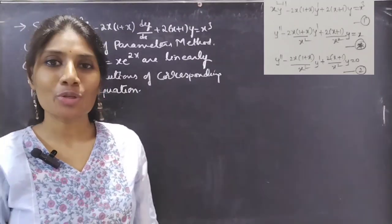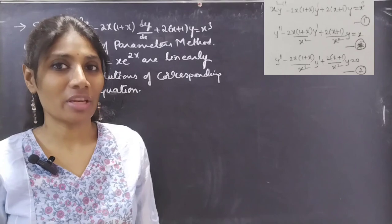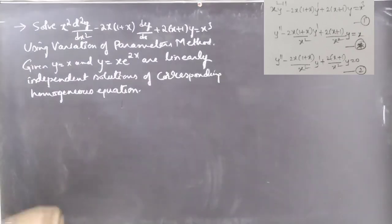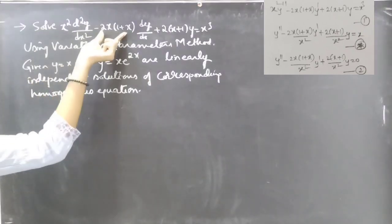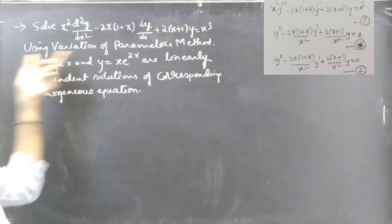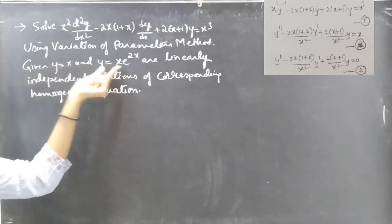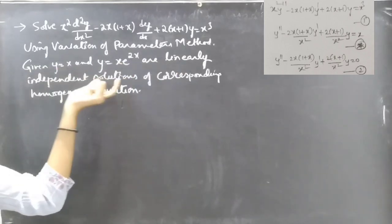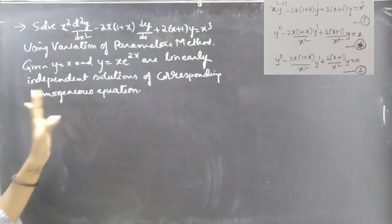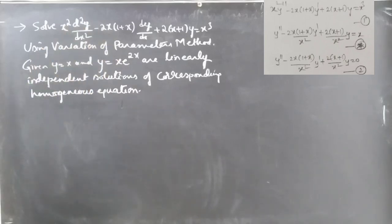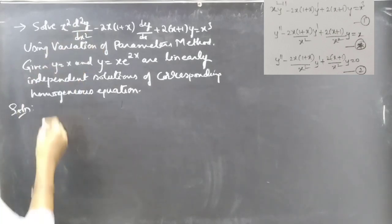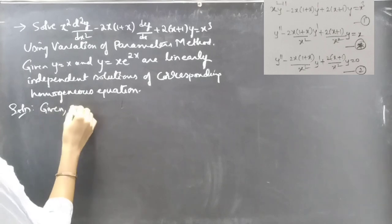Hello everyone, this is Ria Kaltanah. In this video we are going to solve a differential equation using variation of parameters in three ways. The problem is: solve x squared times d²y/dx² minus 2x(1+x) times dy/dx plus 2(x+1)y equals x cubed, using the variation of parameters method.